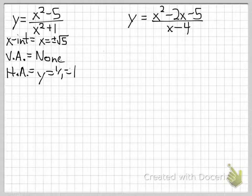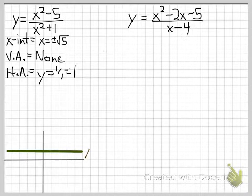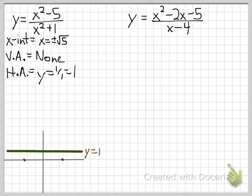For the horizontal asymptote, both numerator and denominator are degree 2 — the same degree — so the horizontal asymptote is the ratio of leading coefficients, 1 over 1, which is just y equals 1.